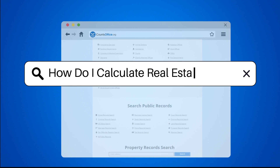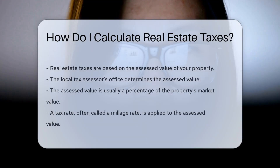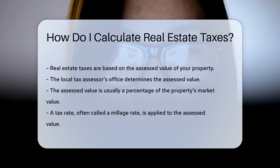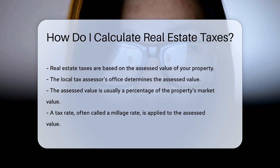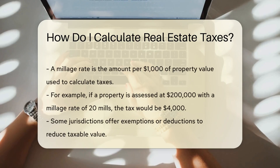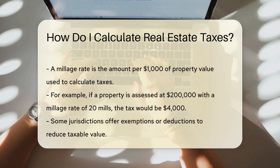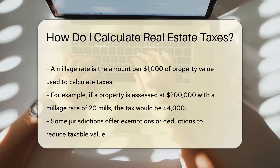How do I calculate real estate taxes? Real estate taxes are calculated based on the assessed value of your property. The local tax assessor's office determines this assessed value, which is usually a percentage of the property's market value. Once the assessed value is determined, the local government applies a tax rate to it. This tax rate is often referred to as a millage rate — the amount per $1,000 of property value used to calculate taxes.